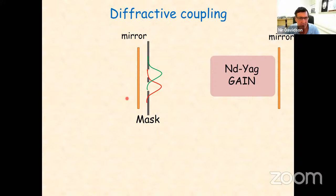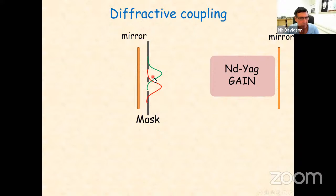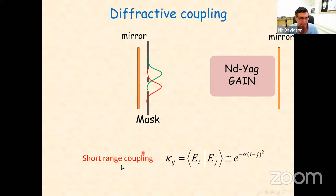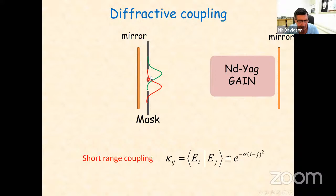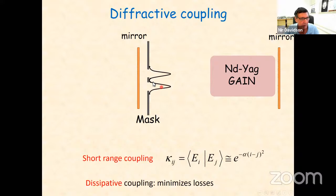I'll show a few ways to couple the lasers. The simplest happens by itself. Consider two lasers in a common resonator with two mirrors, a neodymium YAG gain medium, and a mask with two holes. The red and green modes go back and forth, spread a little by diffraction, and overlap. When modes overlap, they are coupled. For Gaussian modes, this coupling is short-range — nearest neighbor only, with exponentially smaller coupling to farther lasers. The coupling is dissipative: the loss on the metal mask depends on the relative phase between the two lasers.